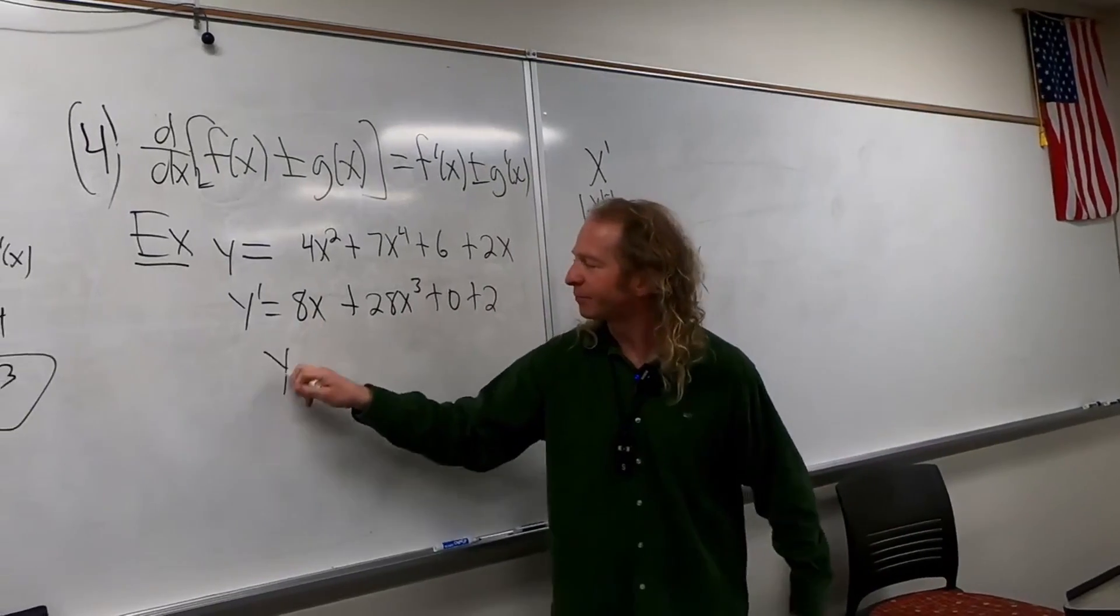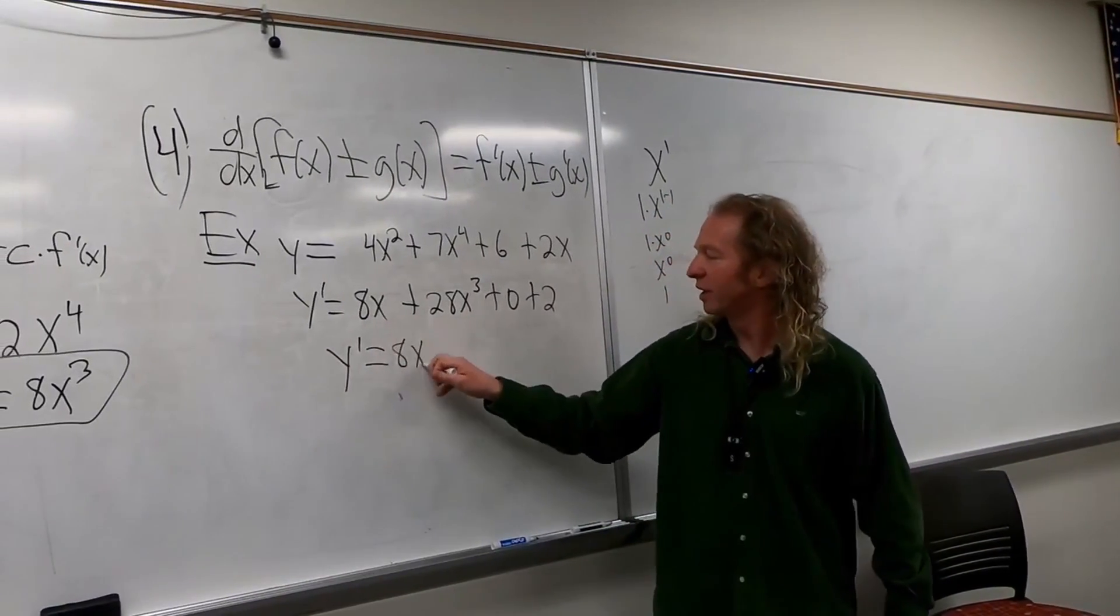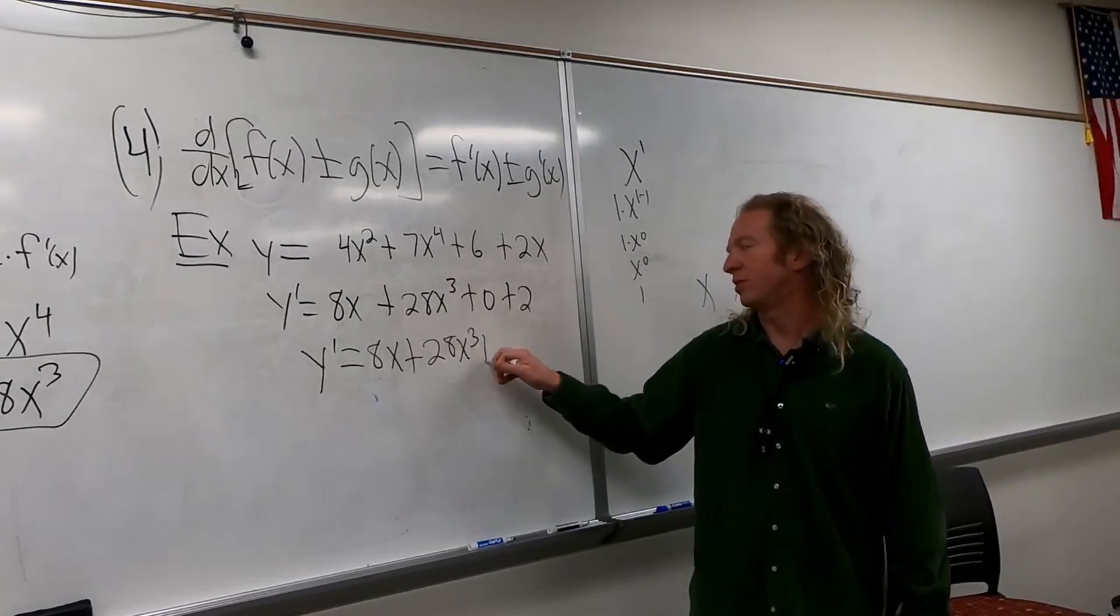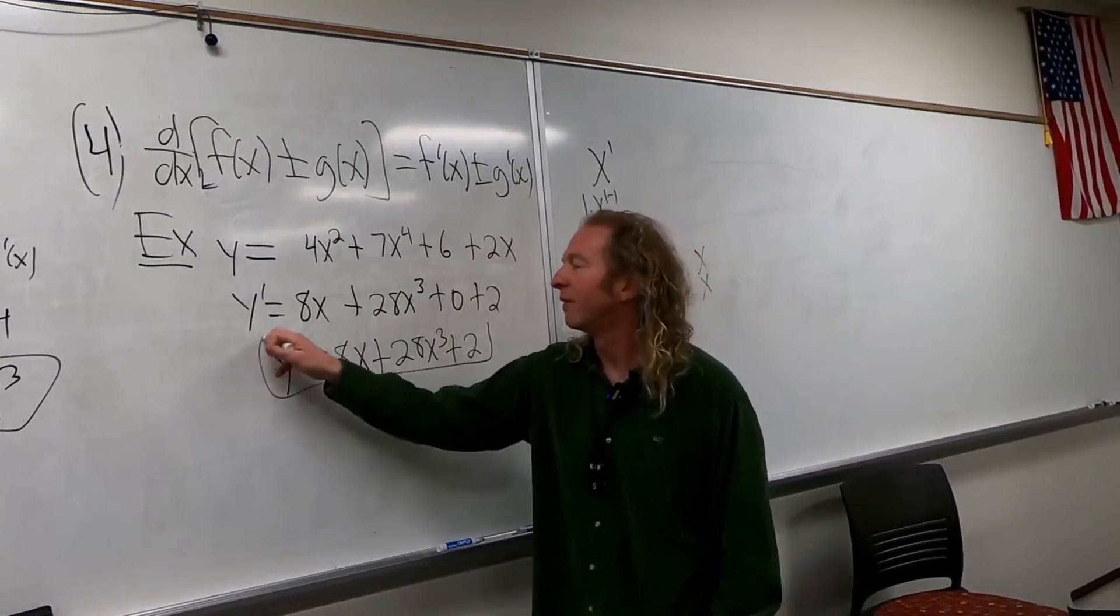So you would just rewrite it now. You would just get 8x plus 28x cubed plus 2. Okay, that's it.